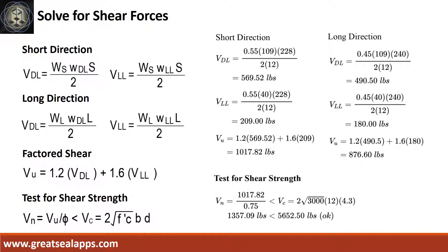At short direction, shear force from dead load is 569.52 pounds, shear force from live load is 209 pounds, for a maximum shear force of 1,017.82 pounds. At long direction, shear force from dead load is 490.5 pounds, shear force from live load is 180 pounds, for a maximum shear force of 876.6 pounds. The nominal shear force is 1,357.09 pounds, less than 5,652.5 pounds.